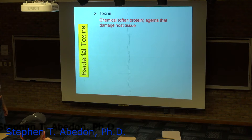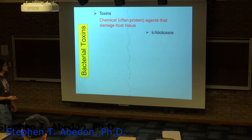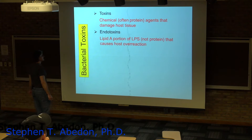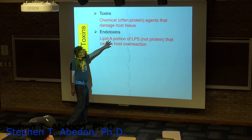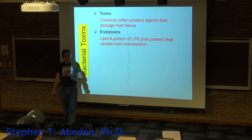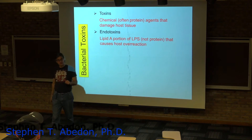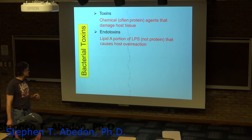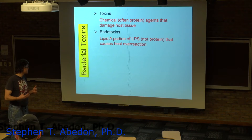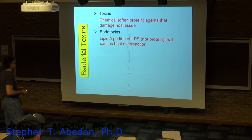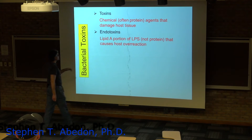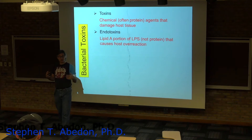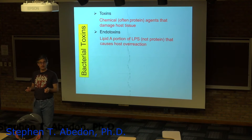You have two basic types of toxins: endotoxin and exotoxin. The endotoxins are actually a portion of the outer membrane of gram-negative bacteria, and what happens is the body uses the presence of this endotoxin, or lipid A as it's also known, to detect the presence of a bacterial infection in the body.